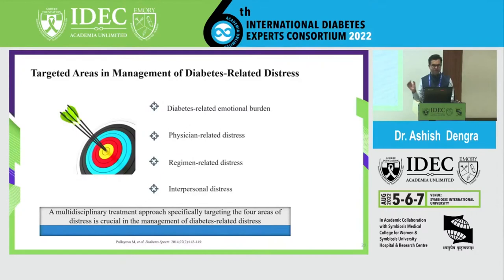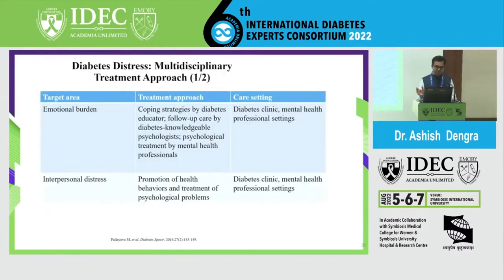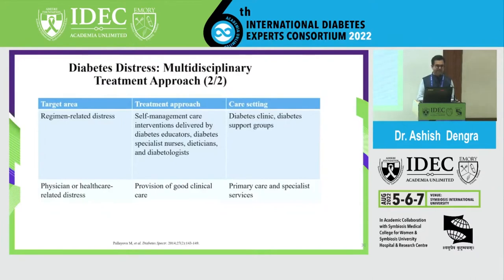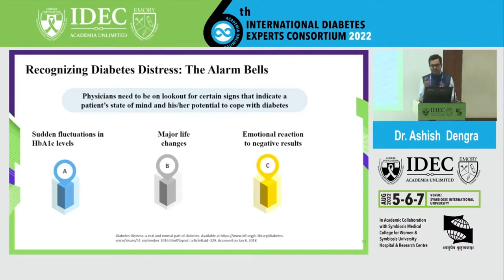Targeted areas include diabetes-related emotional burden, physical stress, regimen-related stress, and interpersonal distress. The multidisciplinary treatment approach specifically targets these four areas: emotional burden, interpersonal distress, regimen-related distress, and physician or healthcare-related distress — all crucial for diabetes distress management. You have to build this multidisciplinary team in your clinic. The alarm is sounding — diagnose these patients at an early stage to prevent sudden fluctuations in HbA1c levels and to prevent major life changes and emotional reactions to negative results.